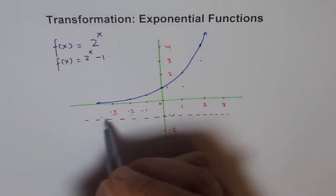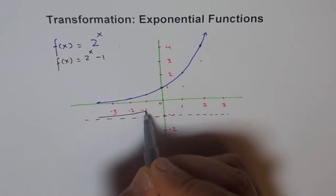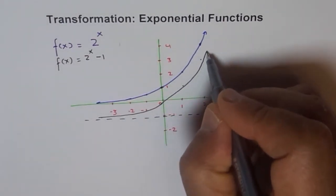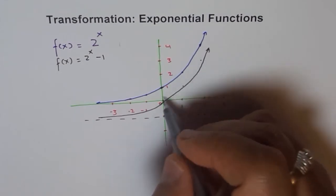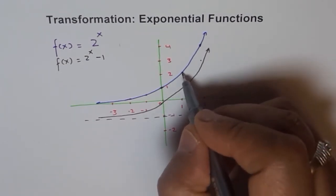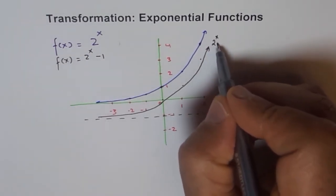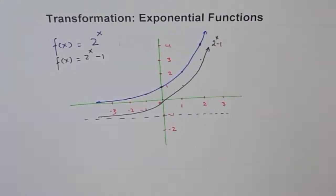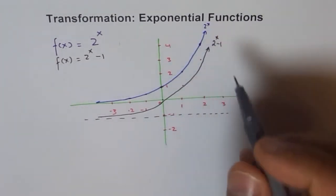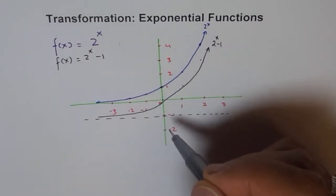So we have a graph here similar in shape, but the horizontal asymptote is now at y = -1, and the curve approaches -1 on the left side. Because when you do translation, the nature of the graph doesn't really change. This is f(x) = 2^x - 1, and the original is f(x) = 2^x. Moving up and down translates all the points up and down.